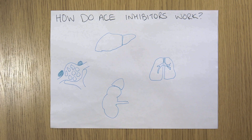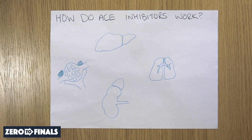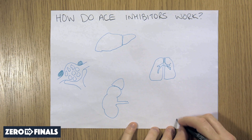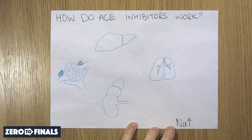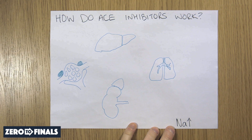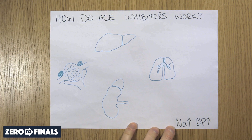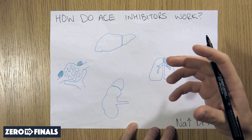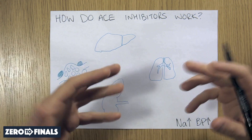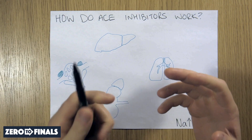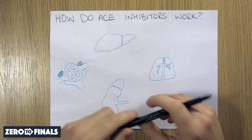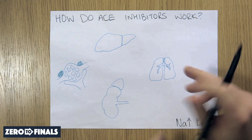I wanted to explain how ACE inhibitors work. The thing that helped me understand this the fastest was just to think of sodium increasing blood pressure. As soon as sodium increases in the blood and in the body, blood pressure increases. If you have more salt in a solution, it's going to draw water from other areas. So if you have more salt in your blood, it's going to draw more water from the rest of your body into your bloodstream, and therefore increase your blood pressure.